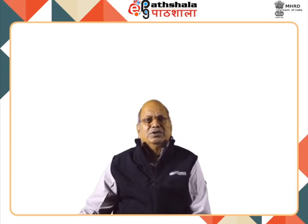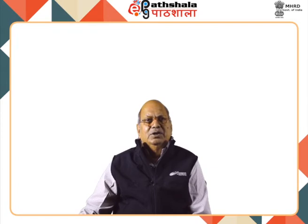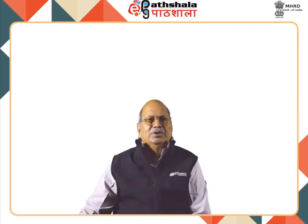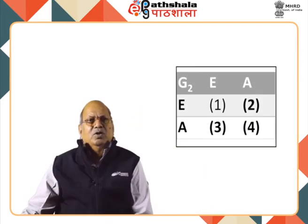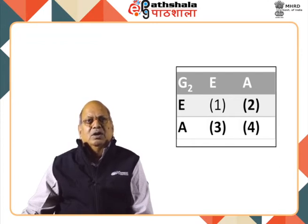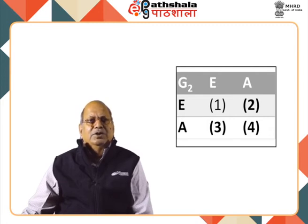Construction of group multiplication table of an abstract group. Let us take the group of order 1, which is nothing but E. There is one group of this order with one element. Now let us take a G2 group of order 2. If it is a group of order 2, the elements are E and A. There are two rows and two columns. G2 has elements E and A with column E and A.